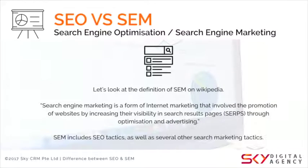Now let's look at Wikipedia's explanation of SEM. Search engine marketing is a form of internet marketing that involves promoting websites by increasing their visibility in search results pages through optimization and advertising. The key word is advertising. SEM mainly consists of paid advertisement efforts to rank your website on the first page of Google, particularly in the top three results.